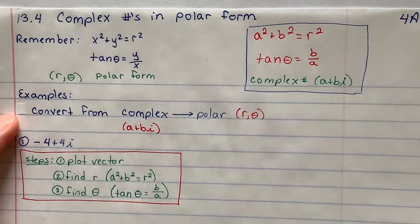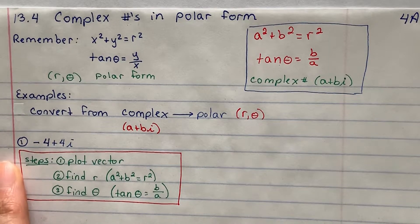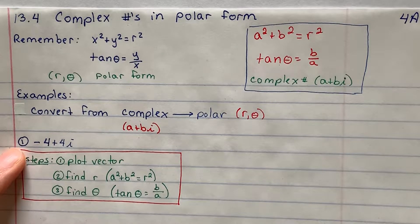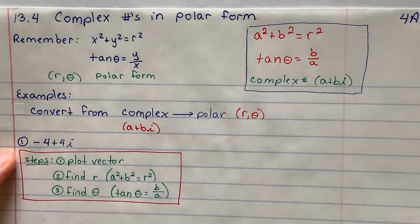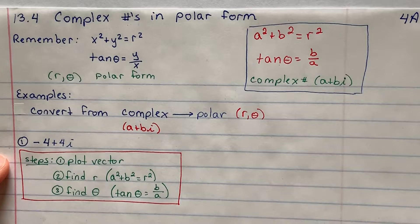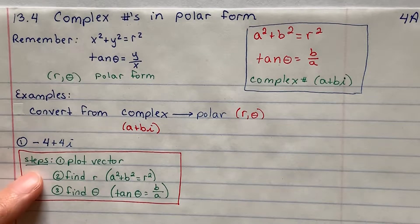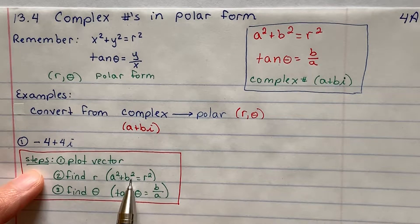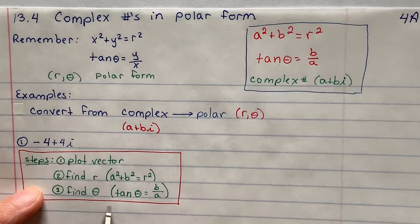So these are the two new elements that we're going to be incorporating into today's lesson, using a and b instead of x and y. The first part is to convert from complex to polar form, and I wrote down some steps here. I'm going to take this coordinate, negative 4 plus 4i, and I'm going to convert them. Here are the steps. First, you want to plot the vector. Step 2, figure out what r is, using the formula. And step 3 is figure out what theta is, using the formula.